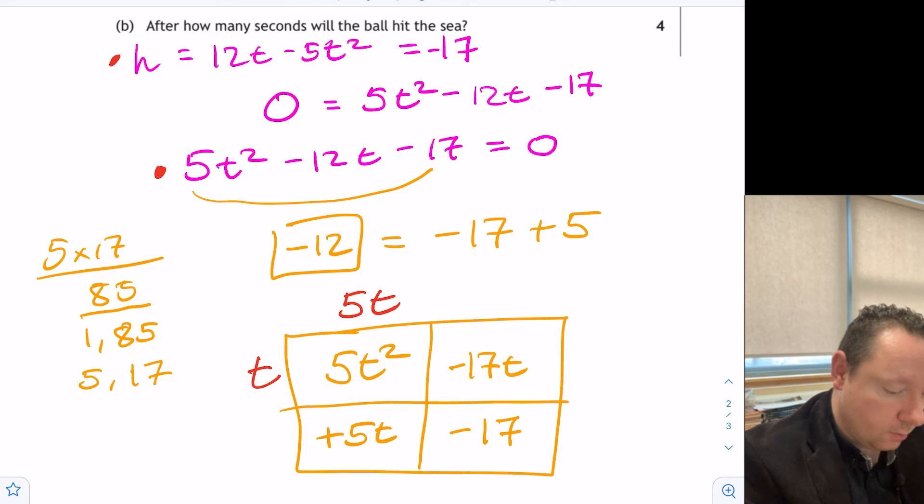Now it's like a Sudoku puzzle. t × -17 is -17t, so it's -17. And 5t × 1 is 5t, so it's +1. My factors have dropped out.